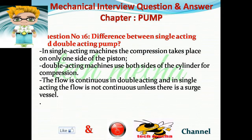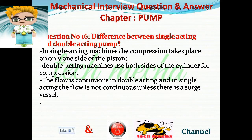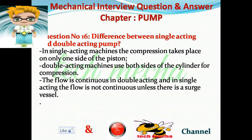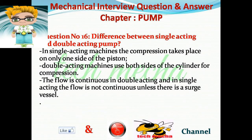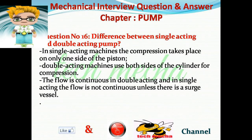Question number 16: What is the difference between single acting and double acting pump? Answer: In single acting machines, compression takes place on only one side of the piston. Double acting machines use both sides of the cylinder for compression. The flow is continuous in double acting, whereas in single acting the flow is not continuous unless there is a surge vessel.